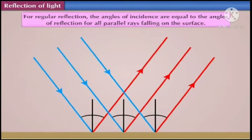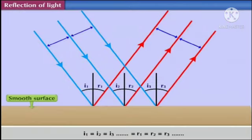For regular reflection, the angles of incidence are equal to the angles of reflection for all parallel rays falling on the surface. Let us suppose angle of incidence for the first, second and third rays are I1, I2 and I3 respectively, and angles of reflection for all three rays are R1, R2 and R3.